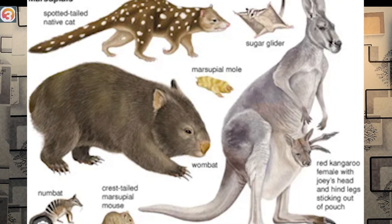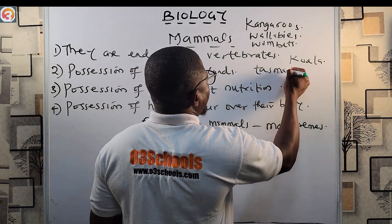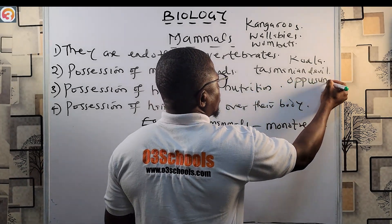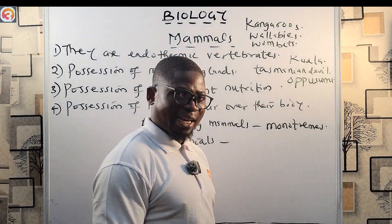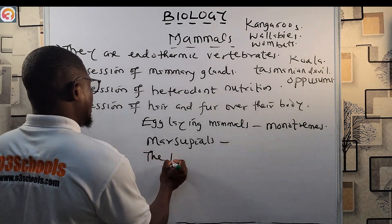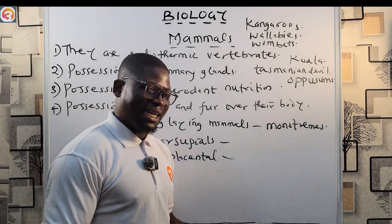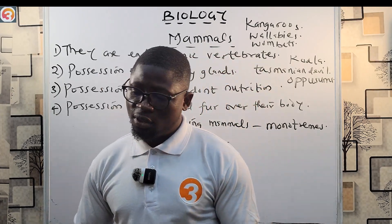Examples of marsupials include kangaroos, wallabies, wombats, koalas, the Tasmanian devil, and opossums. The last major group is the placental mammals, which most mammals belong to. Placental mammals give birth to more developed young ones.